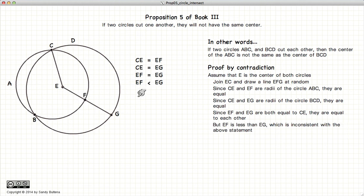So we have EF is equal to EG, and EF is less than EG, which is a contradiction.